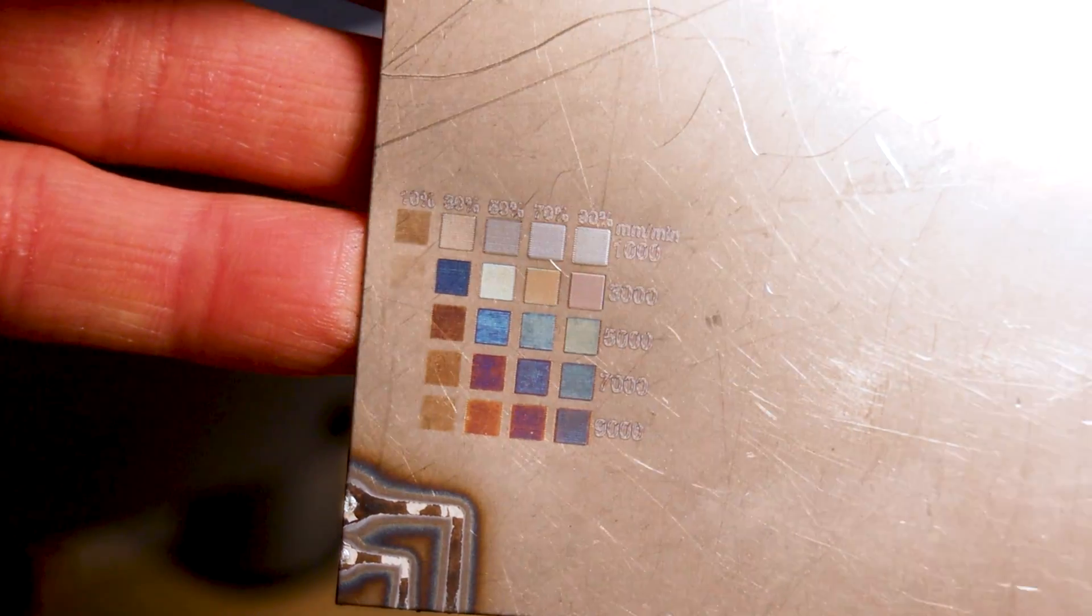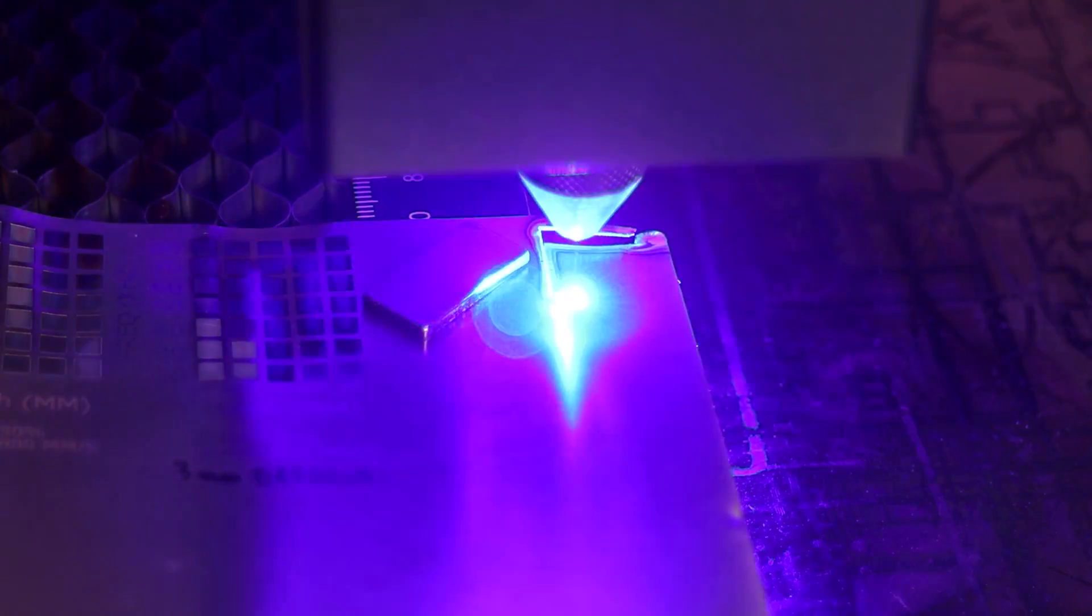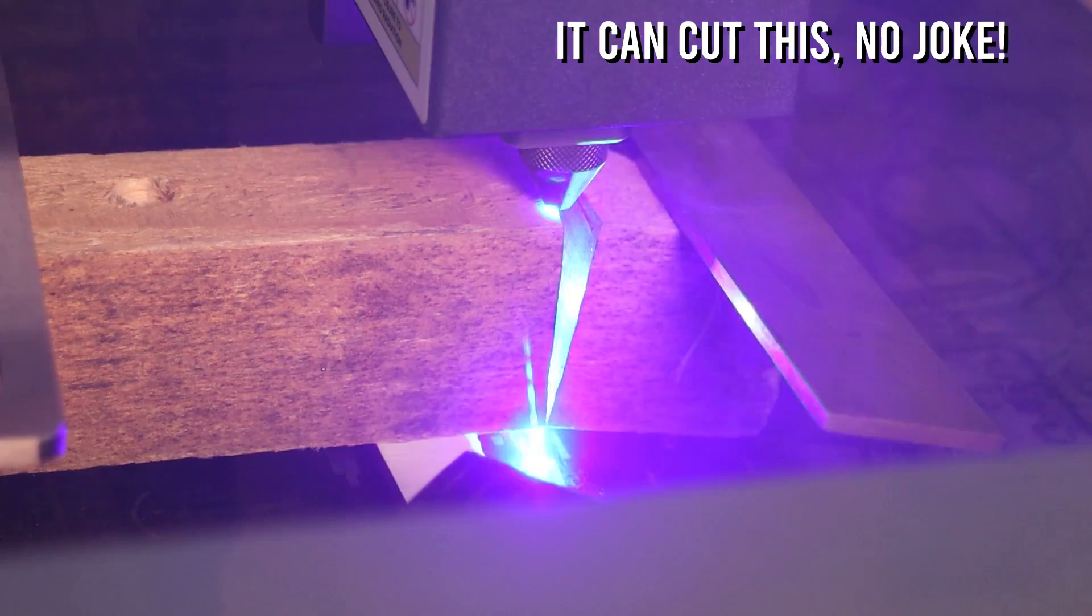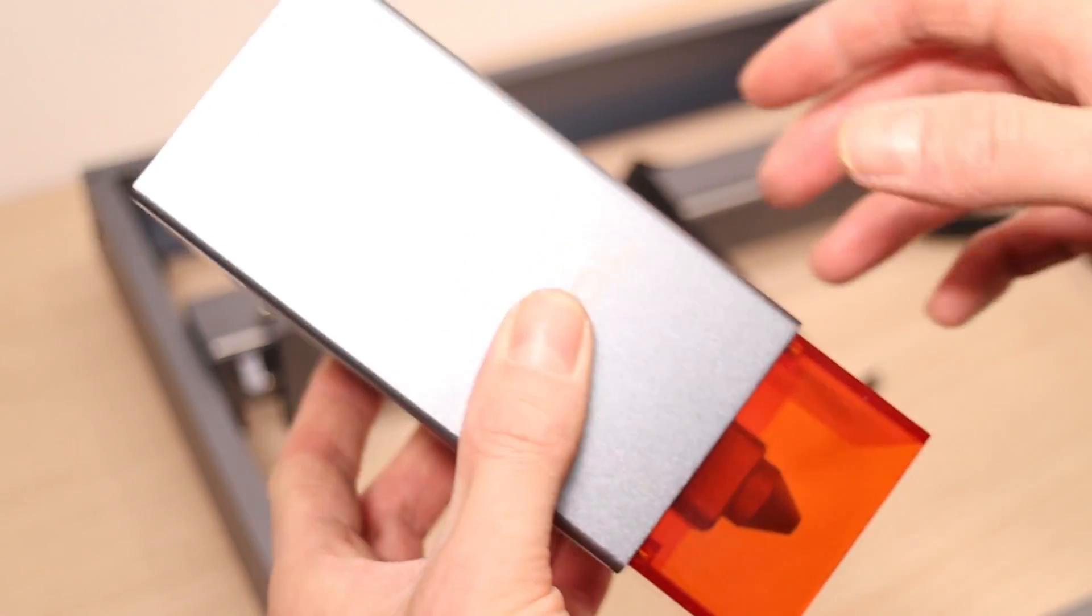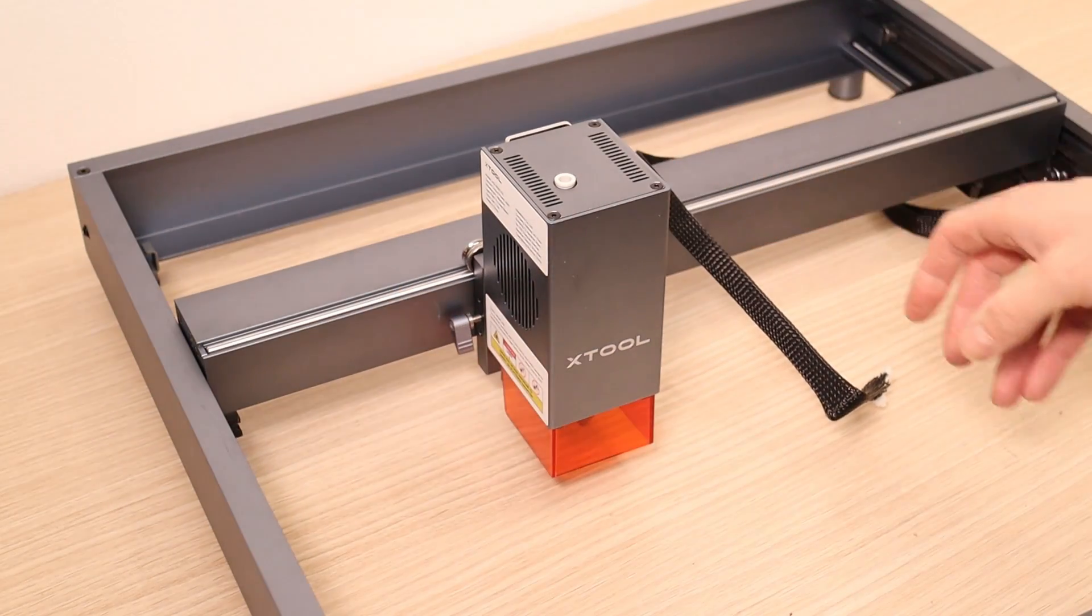I will also show you how to produce colored engravings on titanium and this machine is also able to cut it like butter. If you decide to buy this machine, you can use my affiliate link in the video description below. I get a small commission which helps me make more videos and get you better discounts.